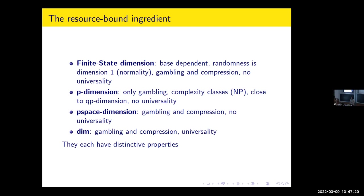With finite-state machines, you don't have universality, but you do have a certain mild universality in the sense of quasi-linear algorithms. It's not the same as universality, but if you're willing to pay the price, it gives you a pretty good universal idea.